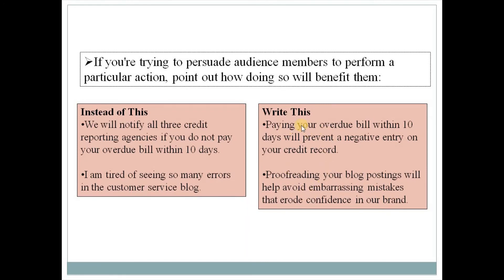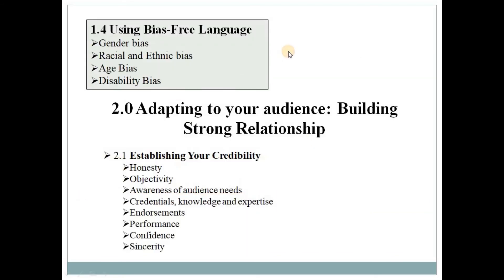Using bias-free language — always use bias-free language. You shouldn't be gender biased, racially or ethnically biased, age biased, or disability biased. For gender bias, for example, instead of using 'mankind' use 'humanity'; instead of 'manpower' use 'workers' or 'workforce.' For racial and ethnic bias, don't be racially or ethnically biased in your communication. Don't be age biased either — instead of saying someone is 'too old,' use the phrase 'senior citizens.' Give respect to your audience and don't be disability biased as well.